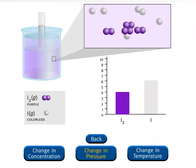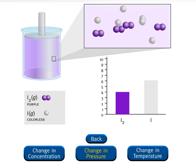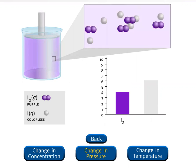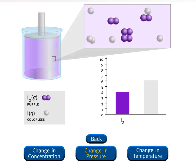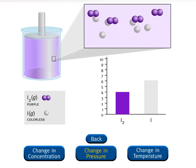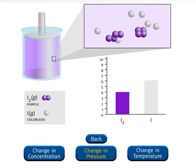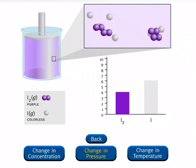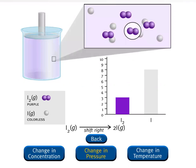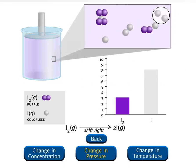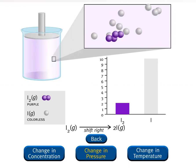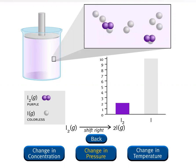You have decreased the pressure by increasing the volume of the container. Le Chatelier's principle states that this stress will be partially offset. The system can partially offset this stress by increasing the moles of gas. Because of the 2-to-1 mole ratio in the balanced equation, more moles of gas can be produced if the system shifts to the right, producing more iodine atoms, as you can see in the microscopic view.